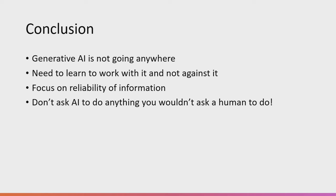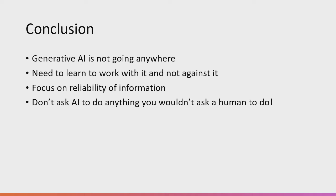We should focus on the reliability of information: what information you can get from generative AI, how to fact-check it, and where to go for reliable information. Through these exercises, students are really starting to understand where the line is drawn for accurate information from generative AI versus using the scientific literature to back it up. A simple ethical heuristic: don't ask AI to do anything you wouldn't ask another human to do.